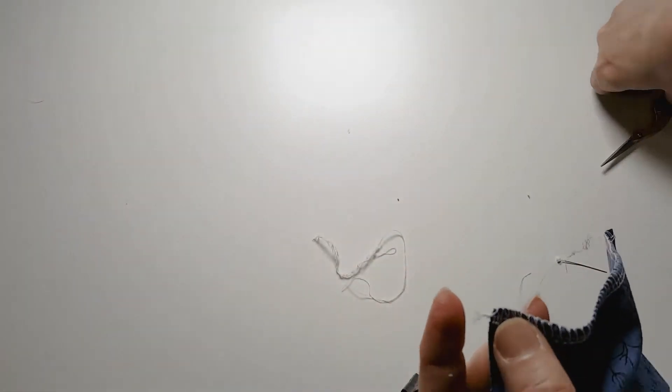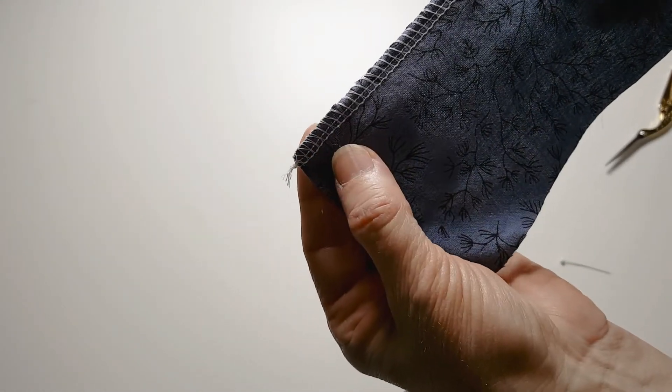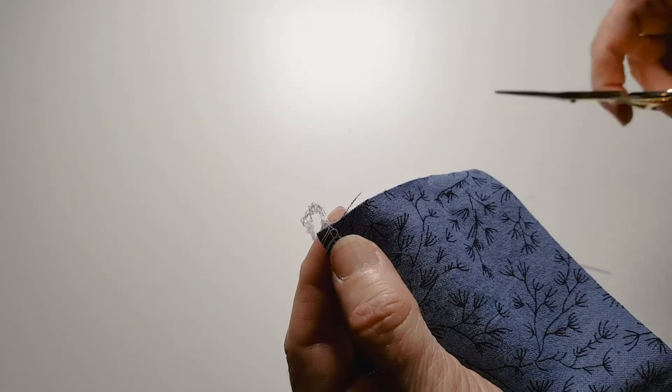Then you simply snip off the extra threads. This isn't quite as neat looking, but if it's on the interior of a garment, that's another way you can do it.